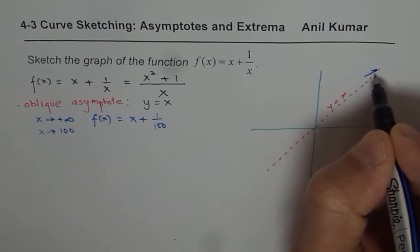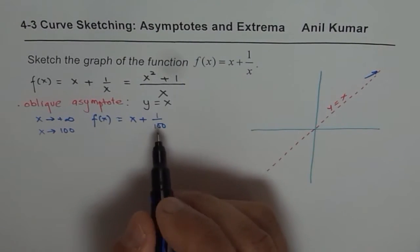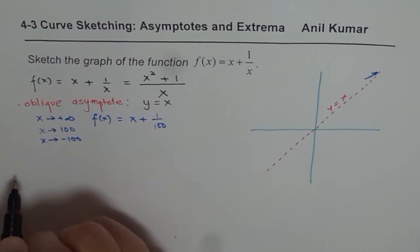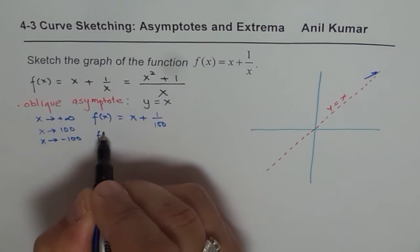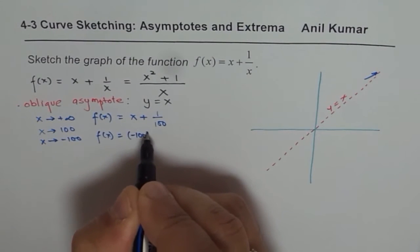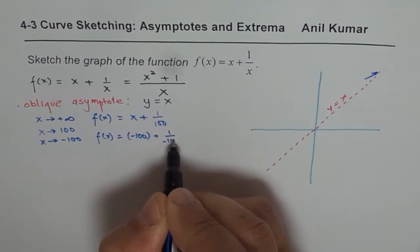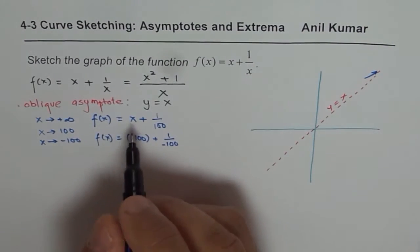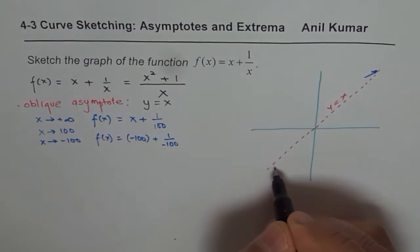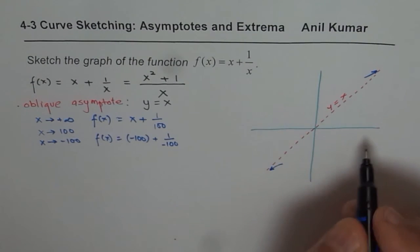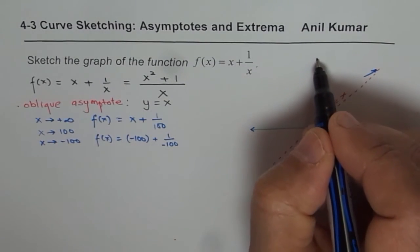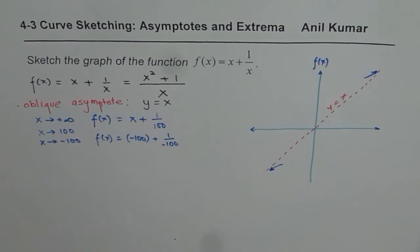On the other hand, if x approaches negative infinity, say x = -100, then f(x) = -100 + 1/(-100), which becomes more negative — it is below x. So the function approaches y = x from below as x approaches negative infinity. This completes the analysis near the oblique asymptote.